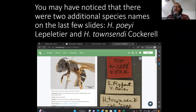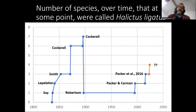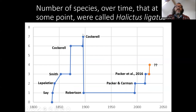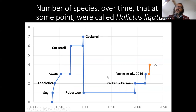You might have noticed that at least two of those species I showed you that weren't ligatus had names — that's because they had been named before. If we look at the number of species over time in what was the big lump Halictus ligatus, it started in 1837. Four years later, Lepeletier described another one. Smith a few years later described another. Cockerell, over the course of a while, described five different species. And Robertson looked at them and said they're all the same. That was the situation for almost 100 years until genetic data showed that some of these earlier guys were right in describing additional species. So the taxon concept for Halictus ligatus has changed substantially over time.